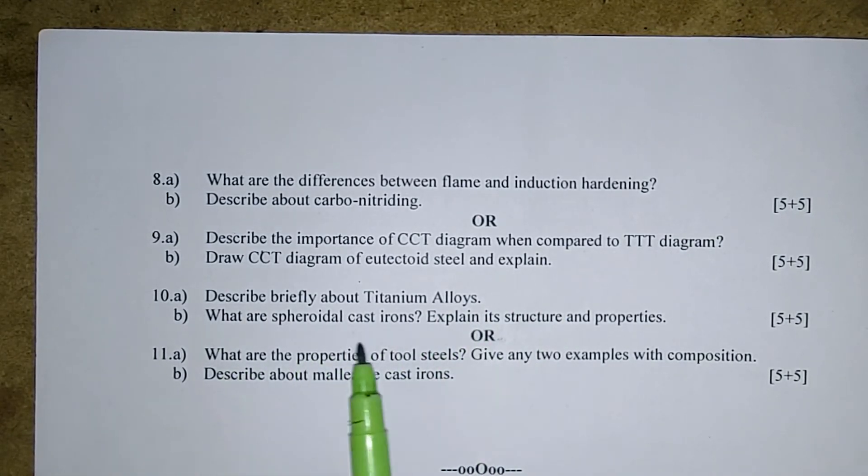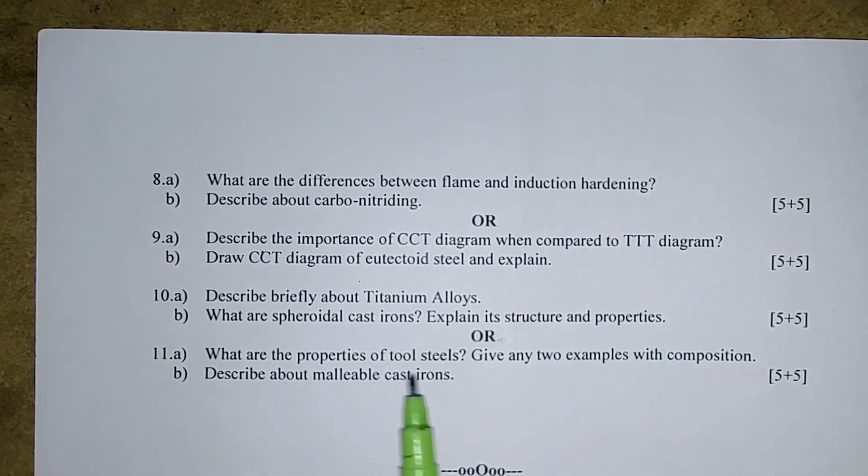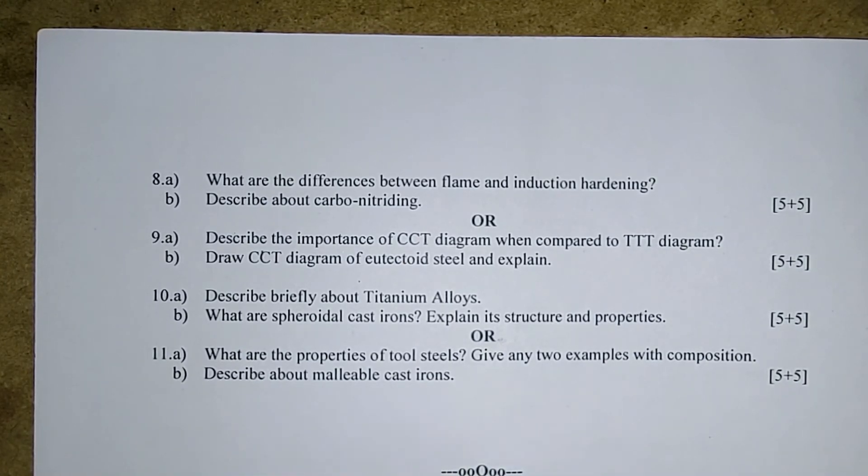Describe briefly about titanium alloys. What are spheroidal cast irons? Explain its structure and properties. What are the properties of tool steels? Give any two examples with composition. Describe about malleable cast irons.